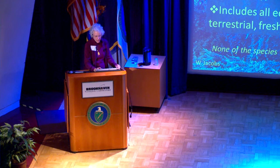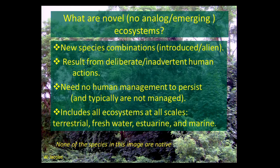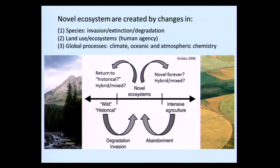Novel ecosystems occur at all scales and in terrestrial, freshwater, estuarine, and marine environments. Most of the work has been done in terrestrial systems so far. Novel ecosystems can be created by species invasions or introductions, loss of native species, land use changes caused by people, and global processes like climate change and changes in the chemistry of the atmosphere and oceans.